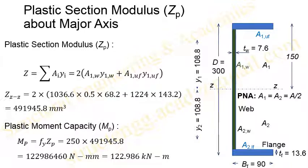The plastic section modulus about the major axis, Zp, comes out to be 491,945.8 mm³. To find the plastic moment capacity, it is simply fy × Zp, where fy is the yield strength of steel. Taking fy = 250 MPa and multiplying by 491,945.8 mm³, the plastic moment capacity comes out to be 122.986 kN·m.